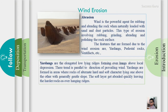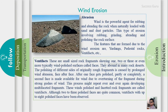Yardangs have overhangs that are thick in the upper portion. This is the effect of hard rock and soft rock. The soft rock is easily eroded, whereas the hard rock is strong. The soft rock is thin and has a polished surface — this is the abrasion process.